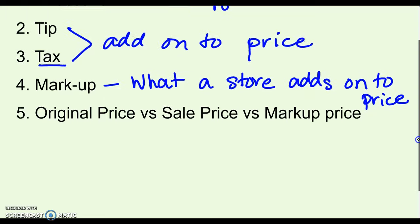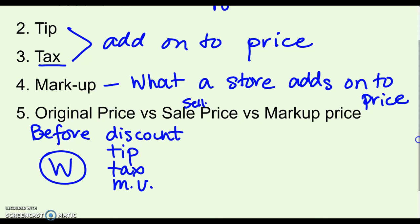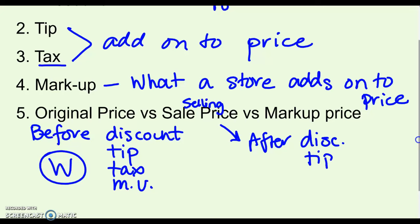To go over a few terms we're going to see a lot in this section: an original price is before either a discount, a tip, tax, or a markup. When we're doing our proportion or equation, the original price is going to be the whole. The sale price or selling price is after a discount, tip, tax, or markup, and that one is going to be the part. Knowing whether you're looking for the original price or the sale price helps you put things in the right spot.